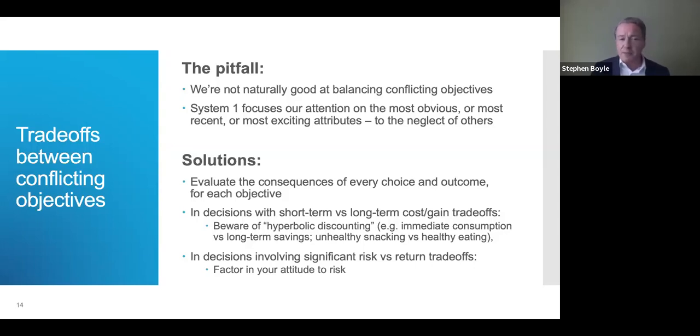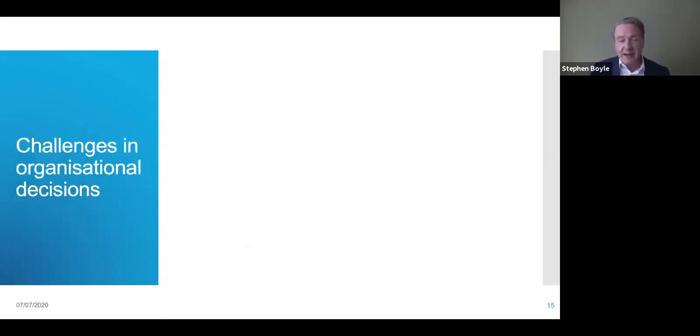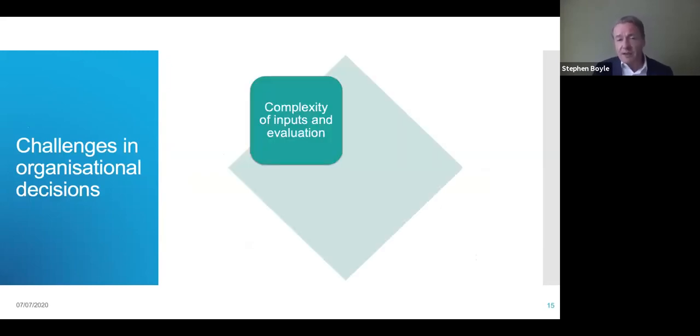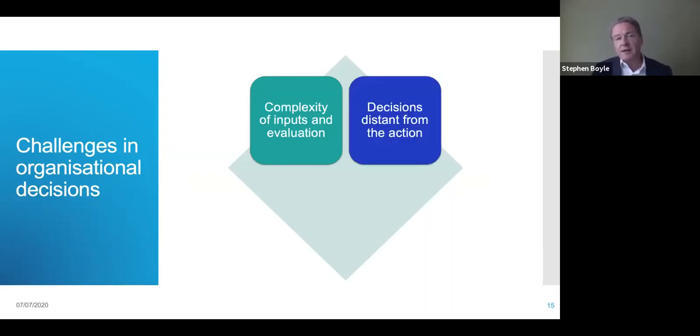There are two particular kinds of trade-offs that can especially throw us. We need to be extra careful when we face choices that have short-term and long-term costs or gains. Often there's a trade-off between these things. The bias in particular we need to be aware of is something called hyperbolic discounting. This is where for example we hugely overweight immediate consumption versus long-term savings or in a more mundane example it's the temptation to give in to a desire for unhealthy snacking versus the long-term desire to eat healthily. Decisions that involve risk versus return are also a particular temptation and we need to factor in our attitude to risk.